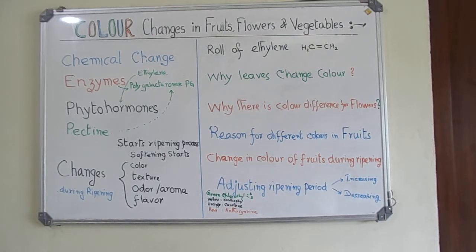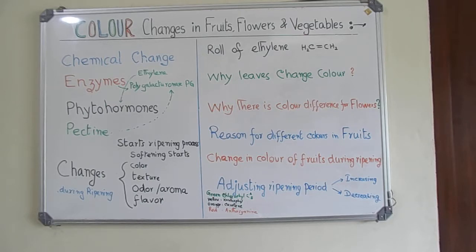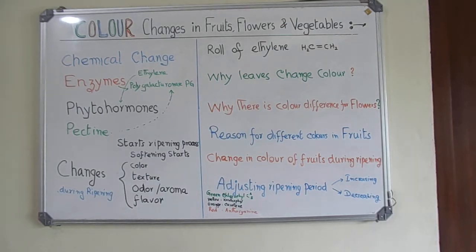The role of ethylene: as you know, the formula of ethylene is C2H4, otherwise called a double-bonded compound — CH2=CH2. This simple hydrocarbon is responsible and acts as a plant hormone, regulating the ripening of fruits, vegetables, and leaves by coordinating the changes of genes.